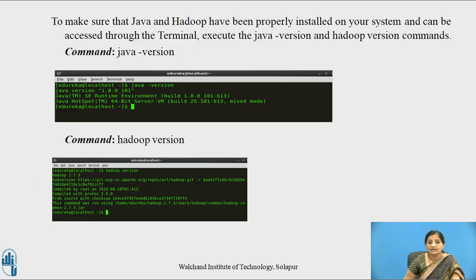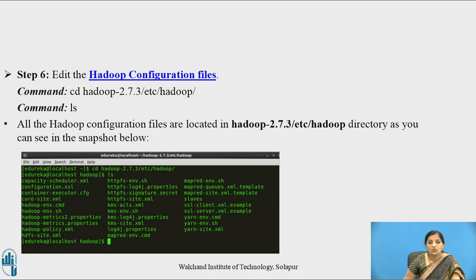To make sure that Java and Hadoop have been properly installed on your system, execute the java -version and hadoop version commands. For applying all changes to the current terminal, execute the source command, that is source .bashrc. Now we need to edit some Hadoop configuration files. So we change to the Hadoop directory, which is stored in its home directory, and list all contents using the ls command.